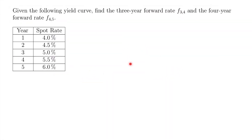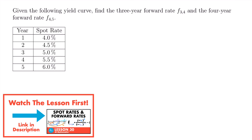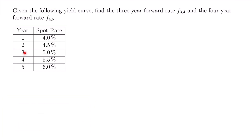Here's our first example. Given the following yield curve, find the three-year forward rate f sub 3,4 and find the four-year forward rate f sub 4,5.